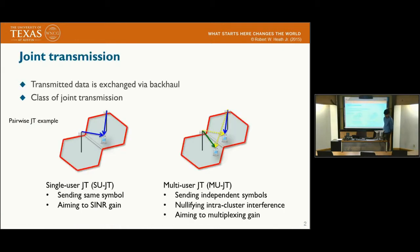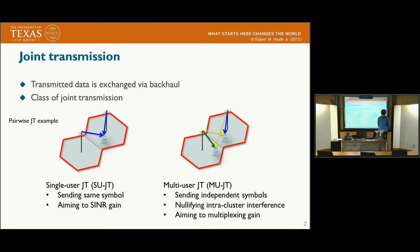Joint transmission is a class of a cooperation method, and this requires data exchange among cooperating base stations via backhaul. There are two major classes of joint transmissions. The first case, which is called single joint transmission, has two cooperating base stations send the same symbol to the same user, and this is mainly targeting to enhance the SINR performance.